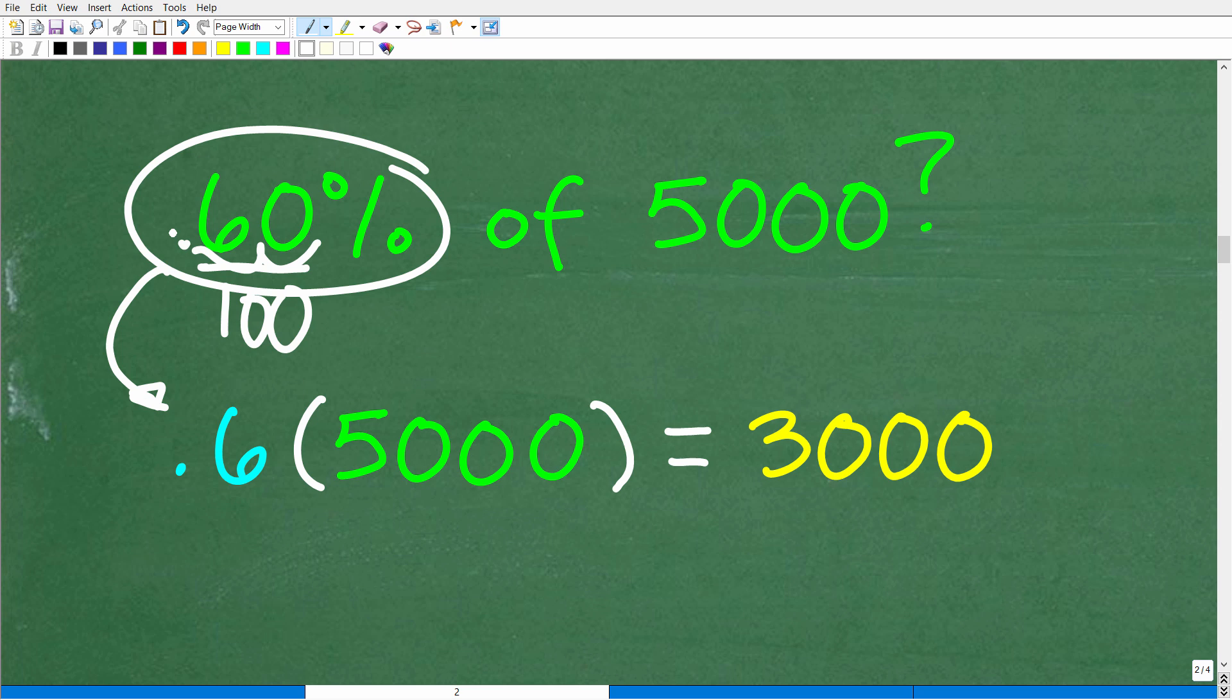So now that we have 60% expressed as a decimal, what we need to do is multiply it by 5,000. So 0.6 times 5,000, of course, is 3,000. All right, so our engine now is running at 3,000 RPMs once we decrease the RPMs by 40%.